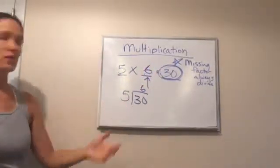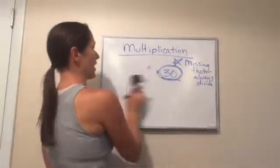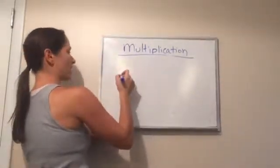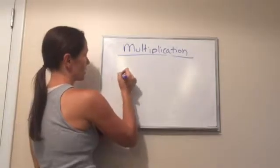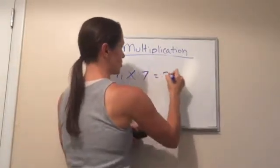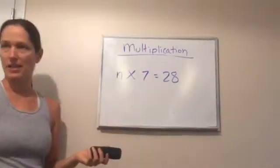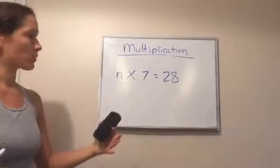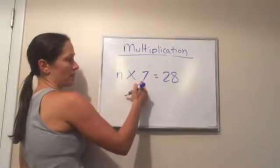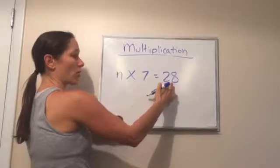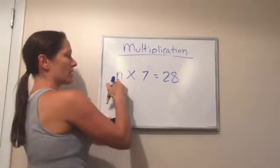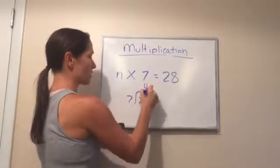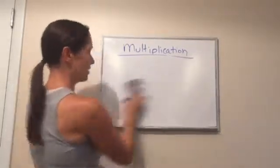Let's say there was a missing factor on the other side: N times 7 equals 28. These are easy problems since we know what times 7 equals 28, but let's work through it. Ask yourself: do I need a smaller or bigger number than 28? Smaller — then multiply by 7. So 28 divided by 7 is 4. And 4 times 7 is 28. Correct.